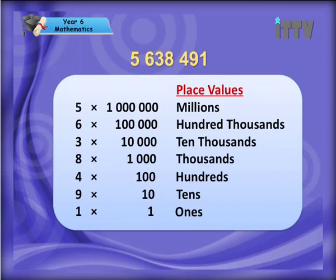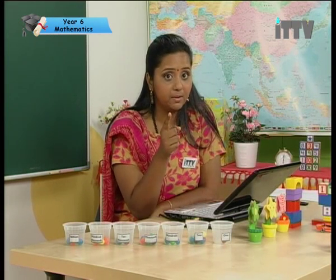If you look at the graphic I've given you, you'll see that I've written five times one million. Remember what I told you — the value of it is five million. That's why you multiply it by one million. So if it's in the hundreds, you multiply it by one hundred; if it's in the ten-thousands, you multiply it by ten thousand. That's how you get the value of the digit. Understand? Please make sure you take notes.